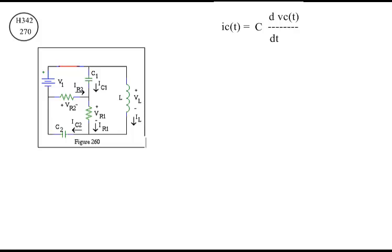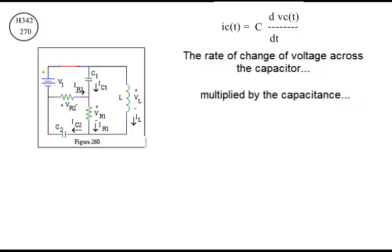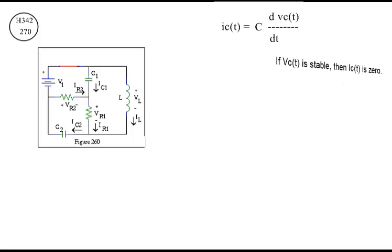This is the current voltage relationship for the capacitor. The rate of change of voltage across the capacitor multiplied by the capacitance is the current through the capacitor. If the voltage across the capacitor is stable, then the current through the capacitor is zero.